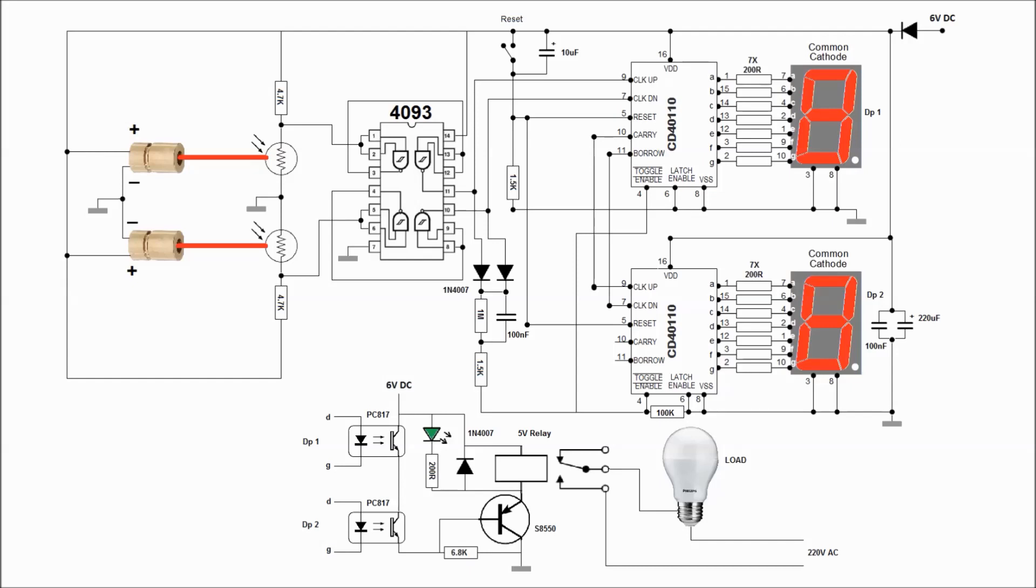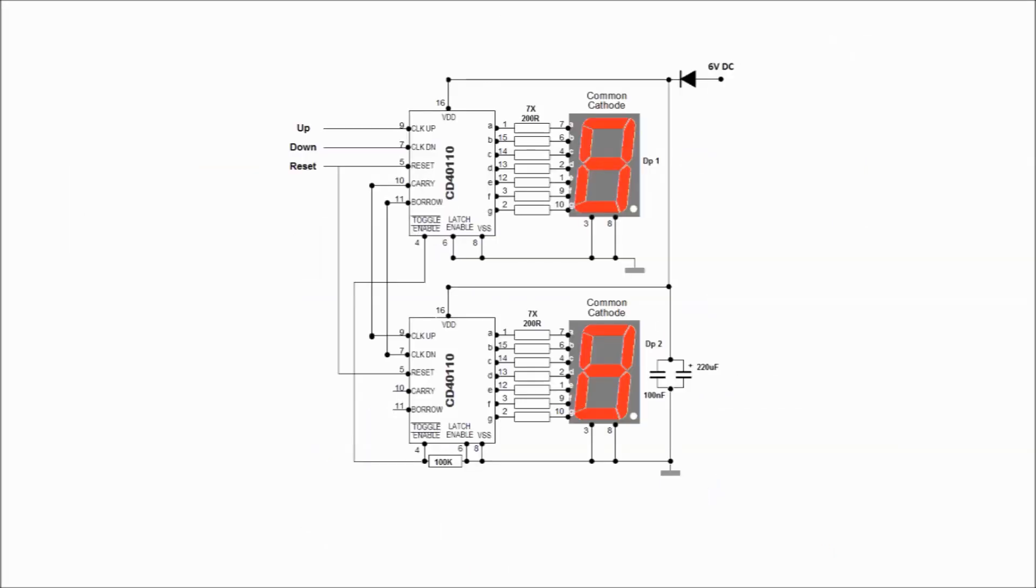This circuit consists of four parts. The first part of this circuit is the counter IC which is used to drive the seven segments. We can control the counting process using three lines: up, down, and reset. By connecting pin 9 to the VCC, the number increases by one. By connecting pin 7 to the VCC, the number decreases by one. And by connecting pin 5 to the VCC, both seven segments come back to zero.